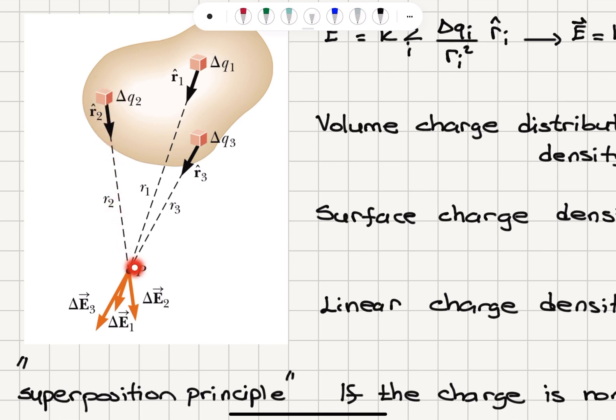point P where our test charge is located. And for delta Q3, which is at a distance R3 from point P, we will have an electric field set up, delta E3, which will be pointing in R3 hat direction.